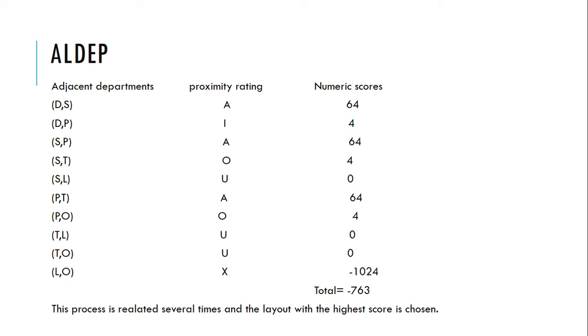After adding all the scores we get a total score of minus 763. This process is repeated several times and the layout with the highest score is chosen.